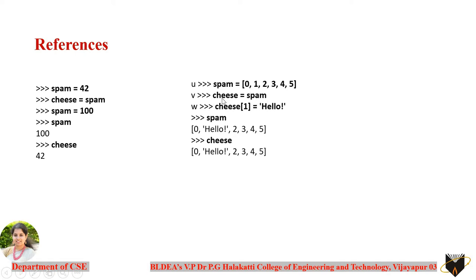We then change cheese[1] — that is, index position 1 — replacing it with 'hello'. Since spam was copied to cheese and spam is a list, cheese is also a list variable. After making the change to cheese, we print both variables. We haven't changed anything with spam, only cheese — yet both spam and cheese show the same result with index 1 replaced by 'hello'.